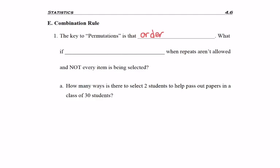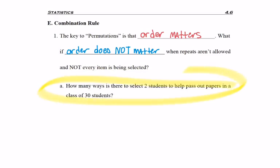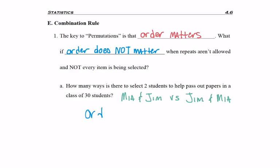The key to permutations is that order matters. What if order does not matter when repeats are not allowed and not everything is being selected? For example, how many ways is there to select two students to help pass out papers in a class of 30 students? Like picking Mia and Jim versus Jim and Mia — order doesn't matter, it's the same two people.